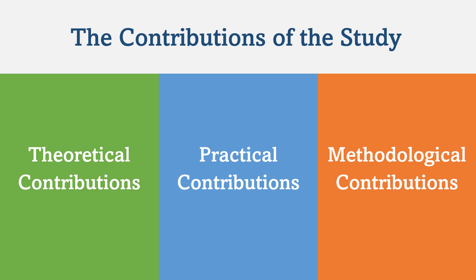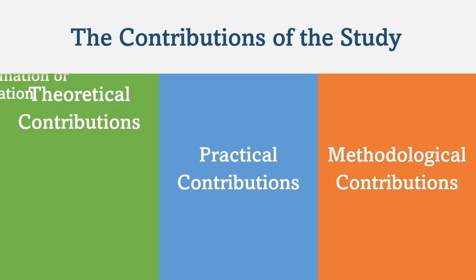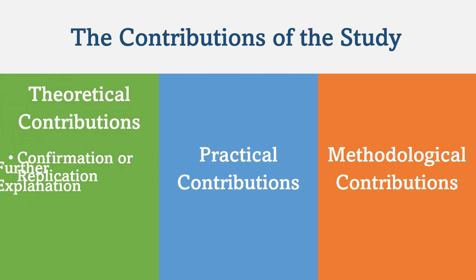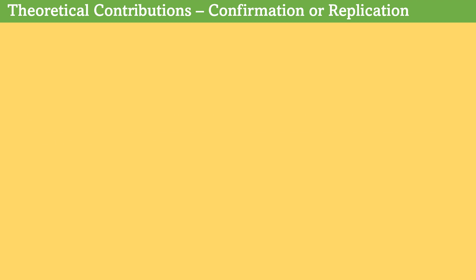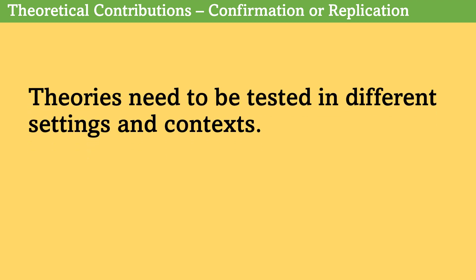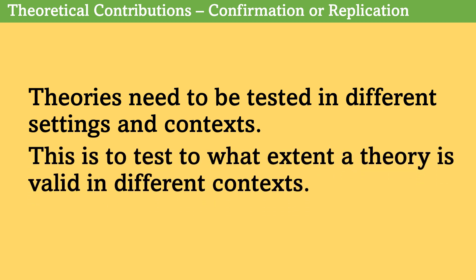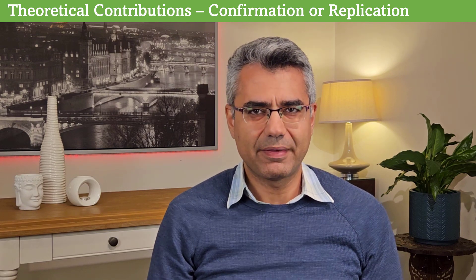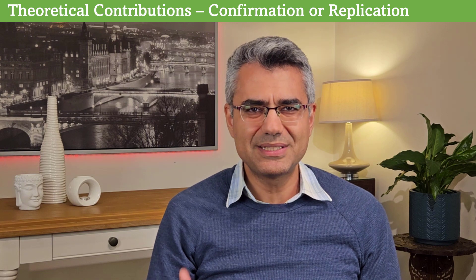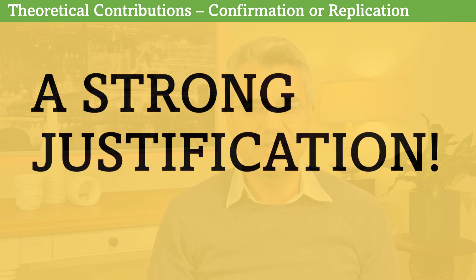The three main groups of theoretical contributions in quantitative studies include confirmation or replication, further explanation, and extension or integration. The first group is confirmation or replication. As mentioned, theories need to be tested in different settings and contexts. So one of the theoretical contributions can be testing a theory and investigating the relationships specified in the theory — replication — to test to what extent a theory is valid in different contexts.